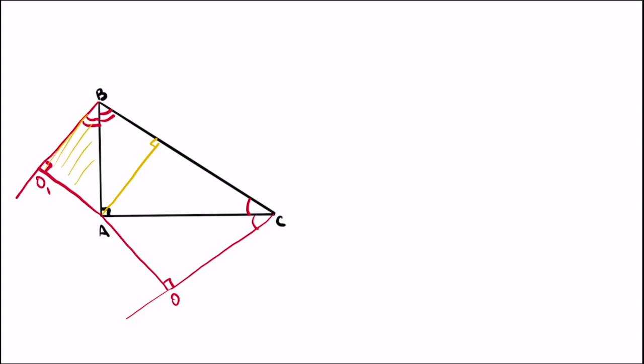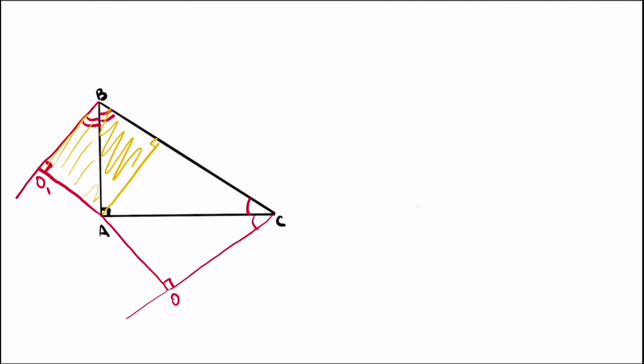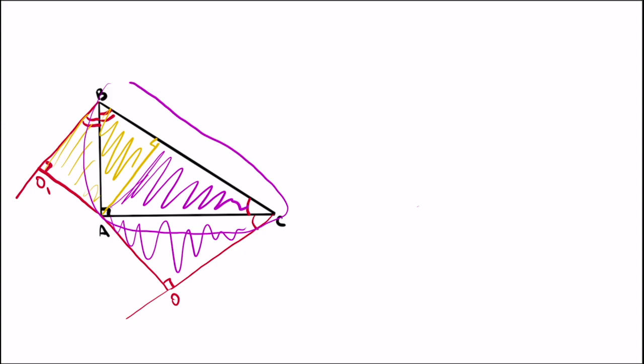and then these two triangles will be equal, and then these two triangles will also be equal, and you can see how they precisely add up to form our initial triangle.